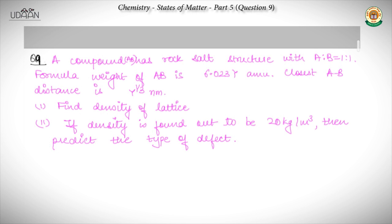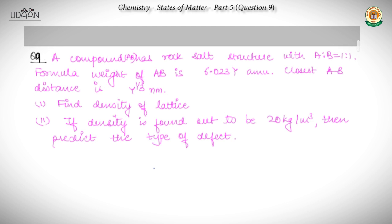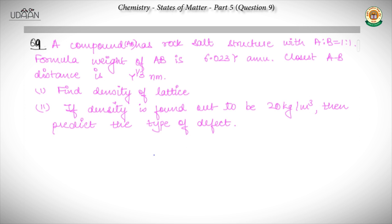The next question is based on another important structure asked in engineering entrance examinations, which is the rock salt structure. A compound AB has rock salt structure with ratio A to B given as 1 to 1. The formula weight of AB is 6.023 AMU. The closest AB distance is given to be y to the power 1/3 nanometers. We need to find the density of the lattice, and if the observed density is 20 kg per meter cube, predict the type of defect occurring.